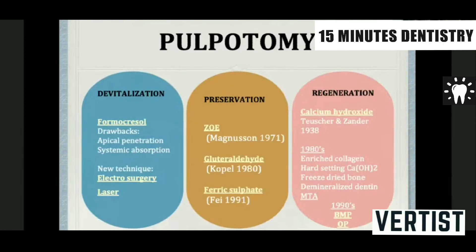Devitalization materials include formocresol, electrosurgery, and laser. Preservation pulpotomy includes zinc oxide, glutaraldehyde, and most commonly ferric sulfate. Regenerative procedures can be done with calcium hydroxide and many others like enriched collagen, hard-setting calcium hydroxide, freeze-dried bone, and demineralized dentine. Newer materials like MTA, bioglass, and biodentine can also be used as pulpotomy medicaments, as well as biologic materials like bone morphogenetic proteins and osteogenetic proteins for primary teeth as well as immature permanent teeth.